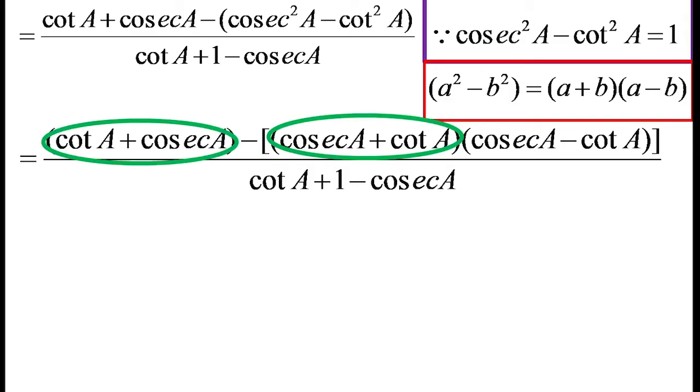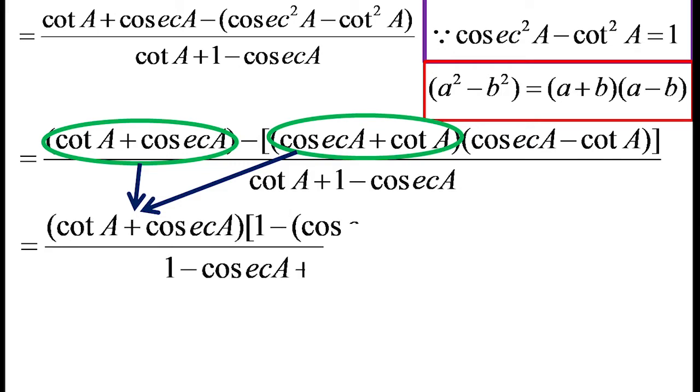Cot A plus cosec A and cosec A plus cot A, both are same, so it is common. So we have to take that outside. So it will be cot A plus cosec A into 1 minus cosec A minus cot A, all divided by 1 minus cosec A plus cot A. And that denominator also I have rearranged.